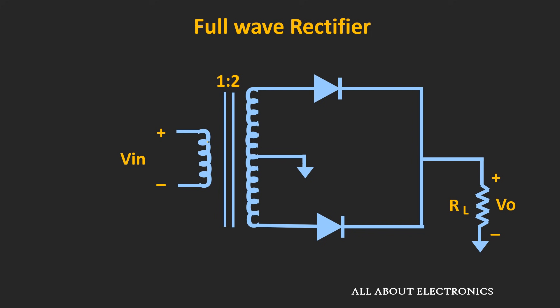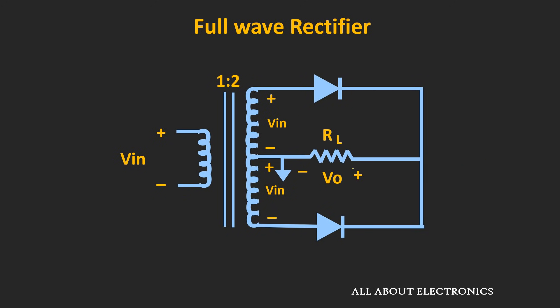As you can see, the center-tap transformer is used at the input side. The center of this secondary winding is grounded. The transformer ratio used in the circuit is 1:2. That means if we apply the input voltage Vin, then at the output of this secondary winding we will get 2 times Vin. And if we measure the output voltage between the center and one end of the winding, it will be equal to Vin. So this 2Vin voltage will get divided between the two parts. Let's assume that the two diodes are D1 and D2.